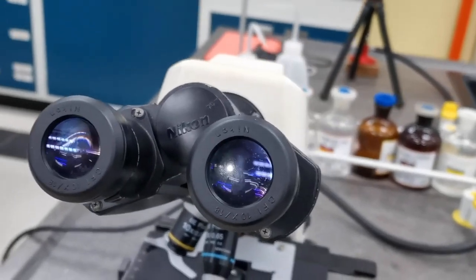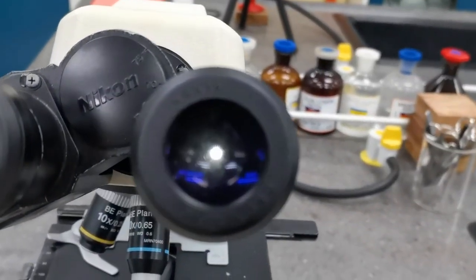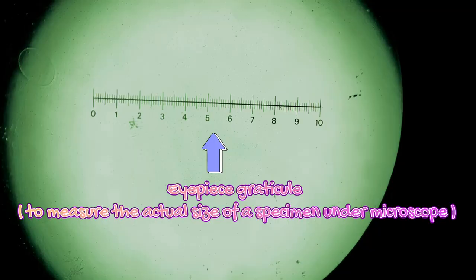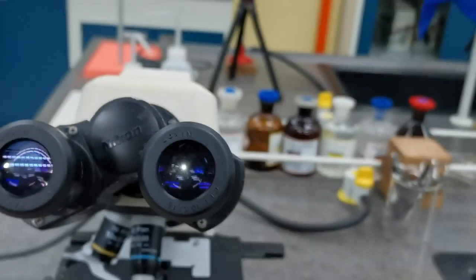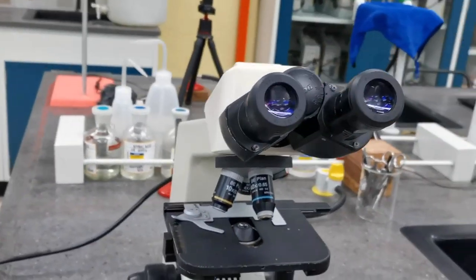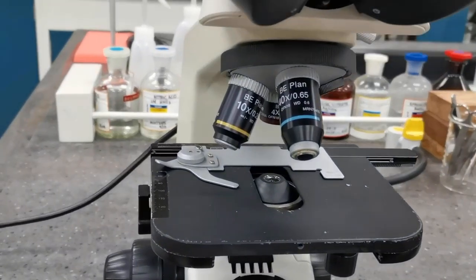Looking into this lens you will find a little scale called the eyepiece graticule. The eyepiece graticule is a scale which we use to measure the actual size of a specimen. The technique to calibrate this eyepiece graticule will be discussed in a separate video. Moving away from the ocular lens, we will now reach the objective lenses.